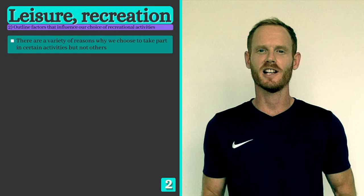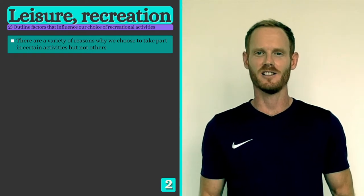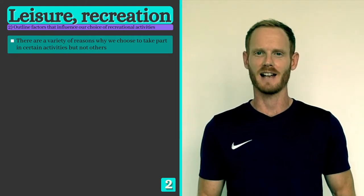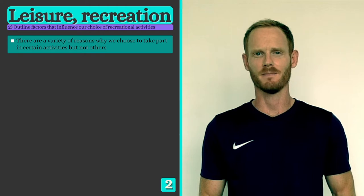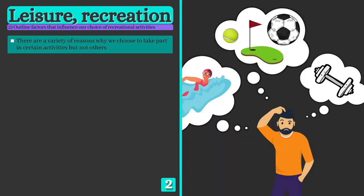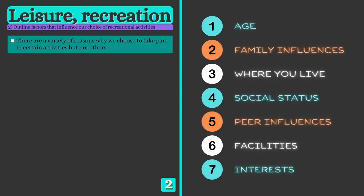Our second learning objective is to outline factors that influence the recreational activities people take part in. There are a number of reasons why people choose to get involved in certain activities over others, and you need to be able to explain how the following seven factors influence our decisions.